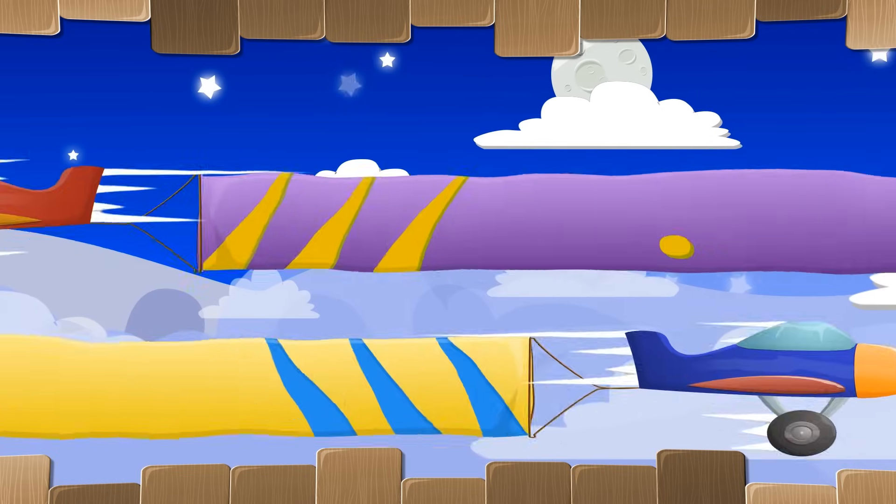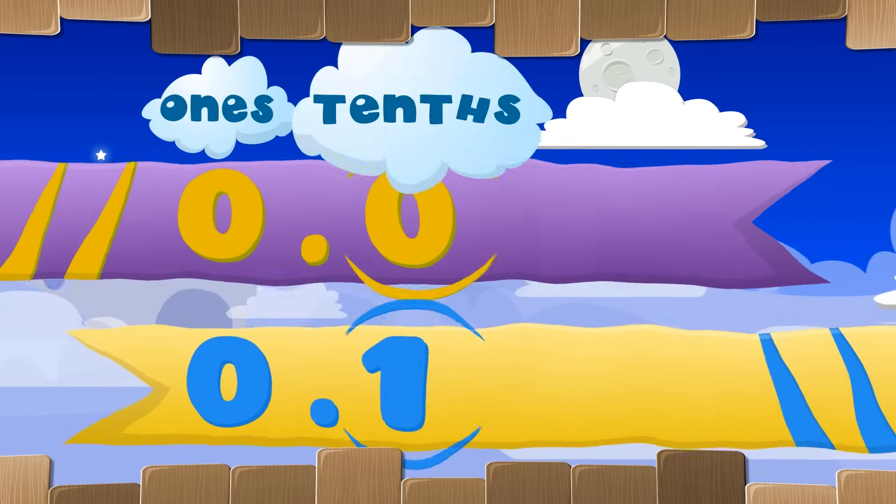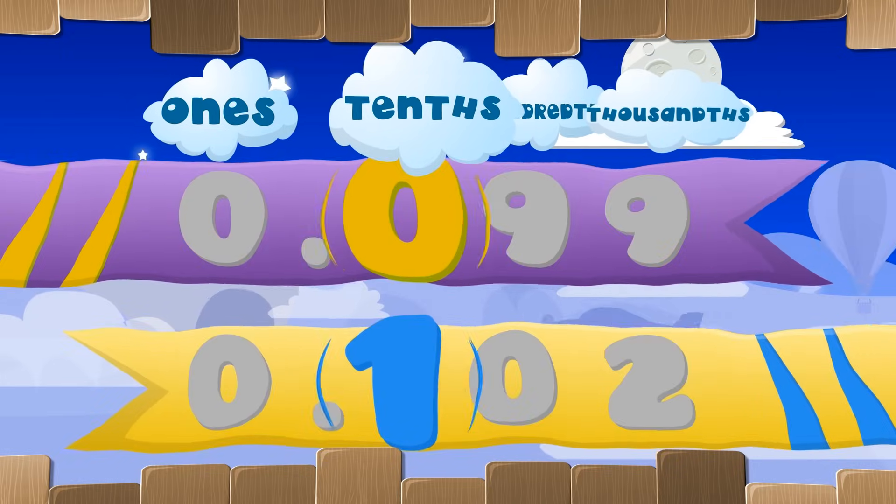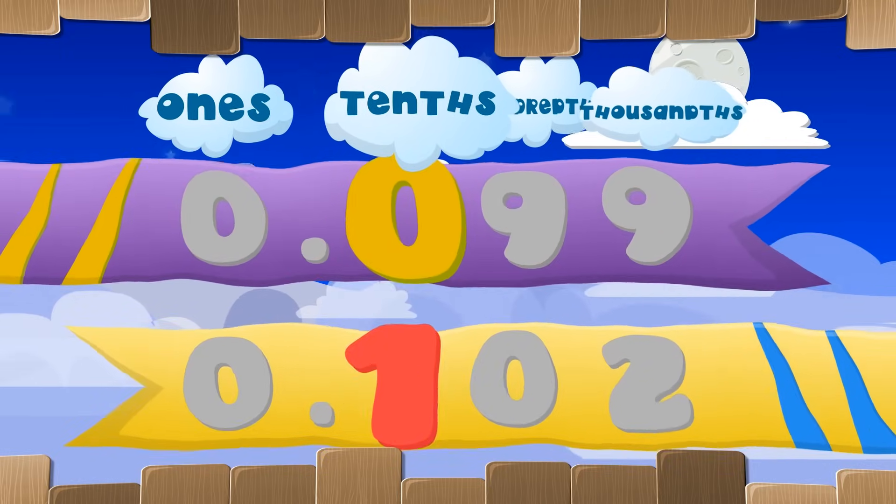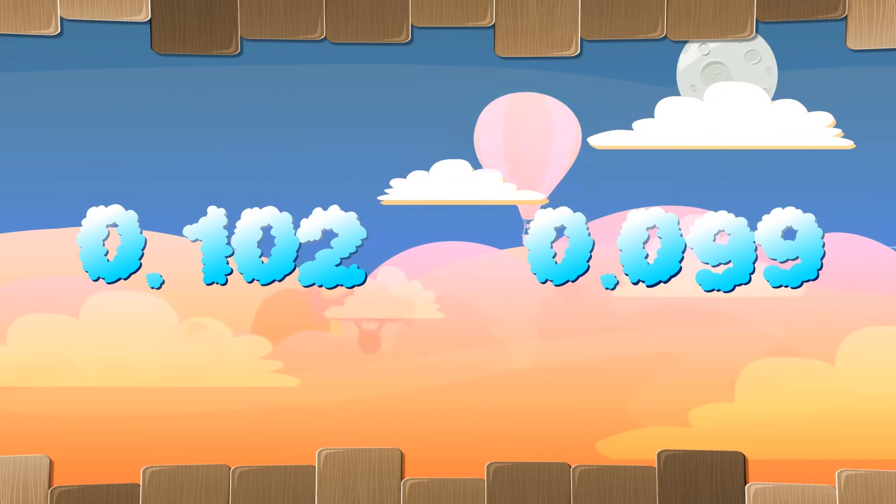Line up the decimal points vertically. Look left to right horizontally. Compare the greatest place that's different. The greater number will become apparent.